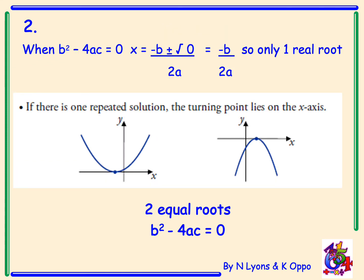Now let's look at when b squared minus 4ac equals zero. If I put that into the quadratic formula, I get x equals minus b plus or minus the square root of zero divided by 2a. The square root of zero is zero, giving x equals minus b over 2a — so only one real root. What we really have is one repeated solution. The turning point lies right on the x-axis. We can say the solution has one repeated root, or two equal roots. This is when the discriminant b squared minus 4ac equals zero.